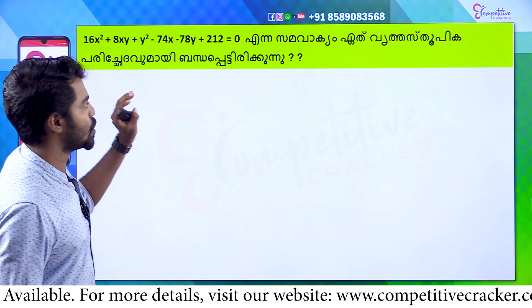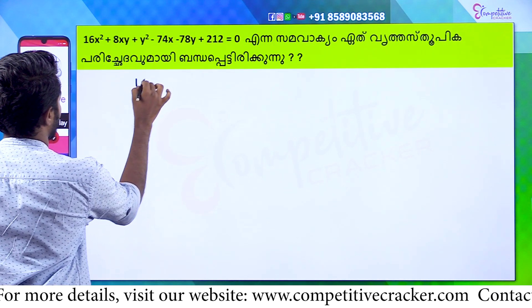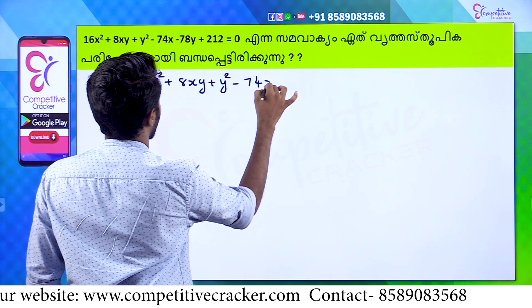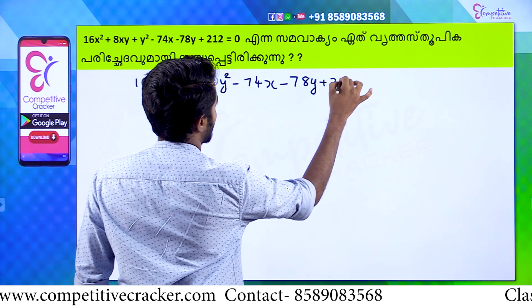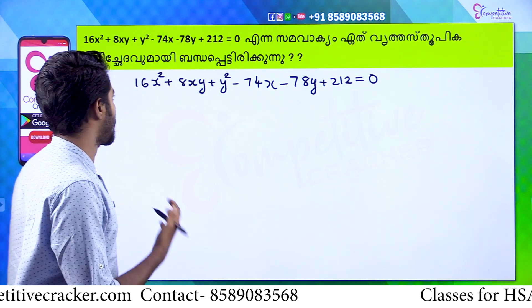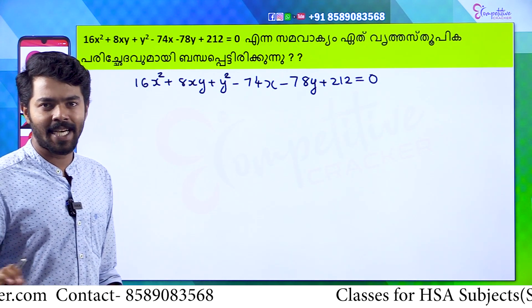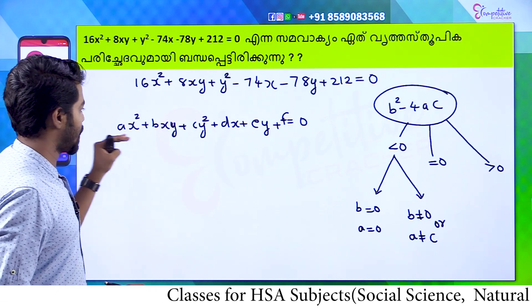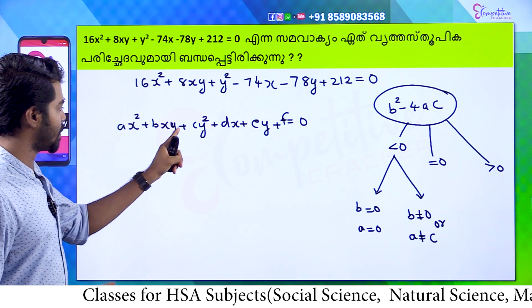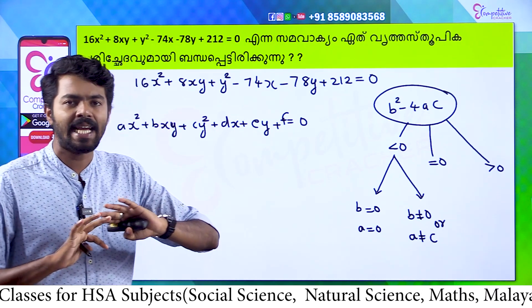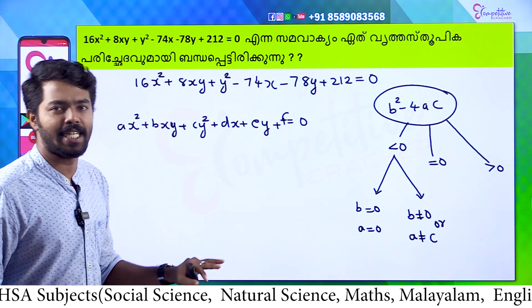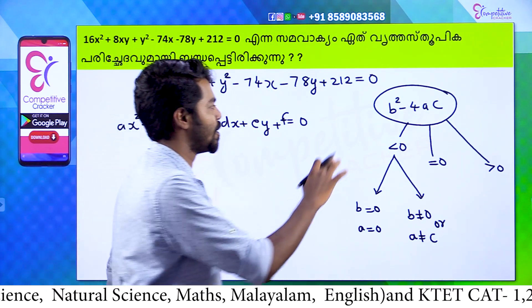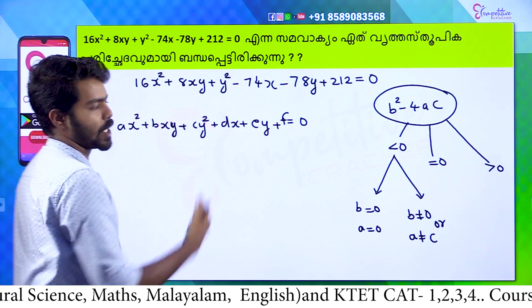I will show you the equation for this. The equation is: 14x² + y² − 74x − 78y + 212 = 0. Now we will show you the trick. We have a general formula: ax² + bxy + cy² + dx + ey + f = 0. This is our general formula. If we need to identify the exact conic section in this general formula, the key is b² − 4ac.